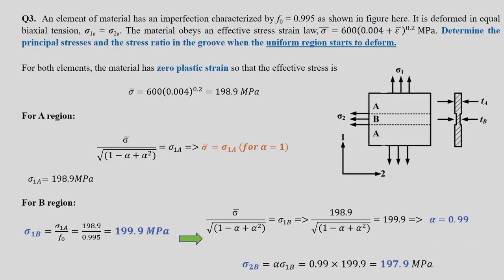The third problem is also related to imperfection. It references a known diagram of a sheet pulled in two directions with principal stresses sigma₁ and sigma₂. Region A is the uniform region and region B is the groove region where thickness is TB versus TA outside. This is where we defined f equals TB/TA. An element has an imperfection characterized by f₀ equals 0.995.